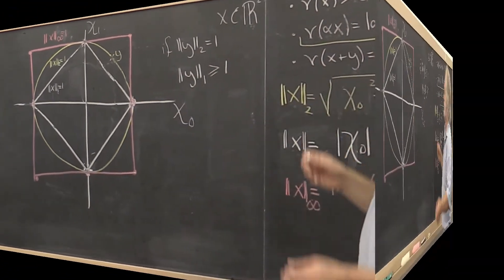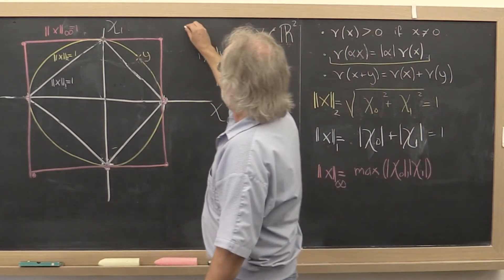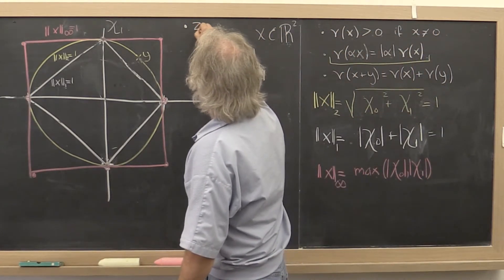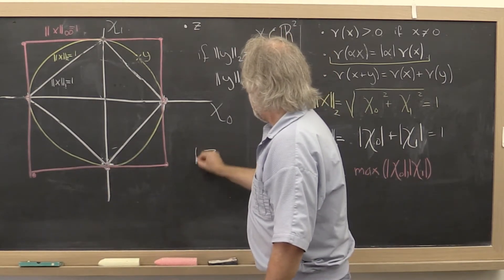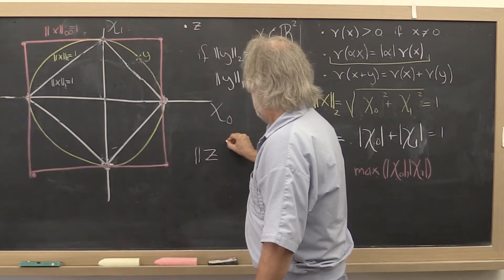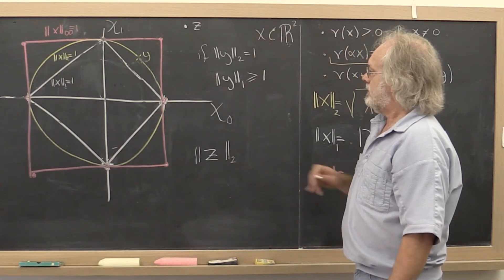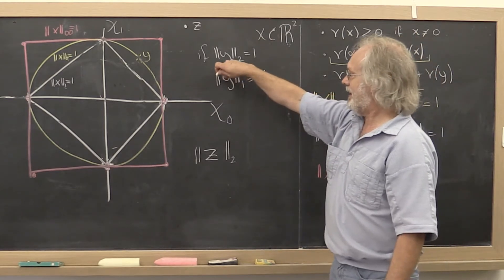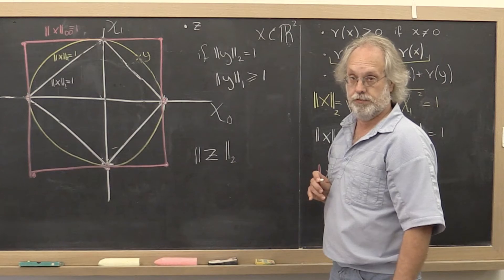Now, let's choose an arbitrary vector. Let's call it z. Let's put it way out here. And let's look at the 2 norm of that vector. Well, it's not the case that its 2 norm is equal to 1, so we can't apply our reasoning that we've done so far.